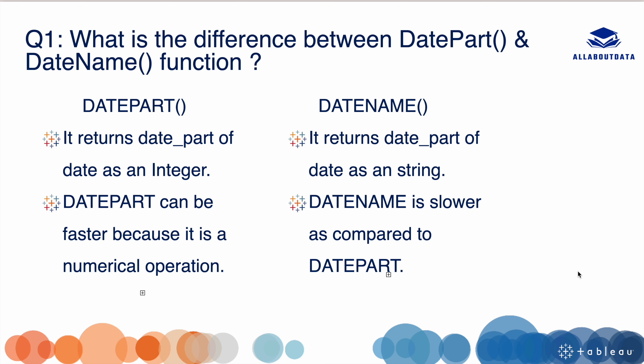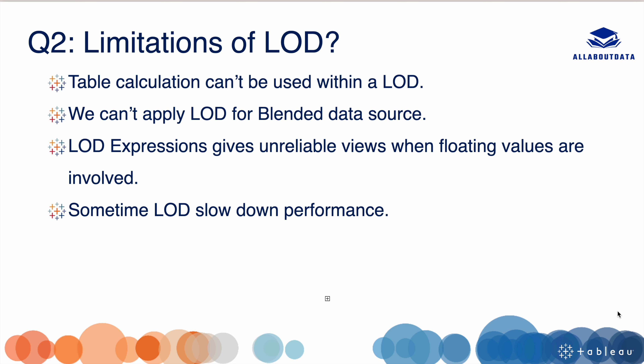Our first question is: what is the difference between DATEPART and DATENAME functions? DATEPART is used to return a date part of a date as an integer — date part refers to years, quarters, months, weekdays, etc. DATENAME returns a date part as a string. DATEPART can be faster because it is a numerical operation, and DATENAME is slower because it is a string operation.